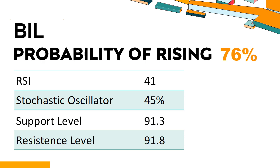Trend Outlook: The probability of BIL share price rising is 76%. When the probability of rising is higher than 50%, it means the stock has a higher chance of rising. Combining multiple technical analysis indicators, BIL has three bullish signals and five bearish signals. BIL's short-term support level is 91.4; if it falls below 91.4 during the session, it will have a chance to test 91.3. BIL's short-term resistance level is 91.7; if it breaks through 91.7, it will look up to 91.8.